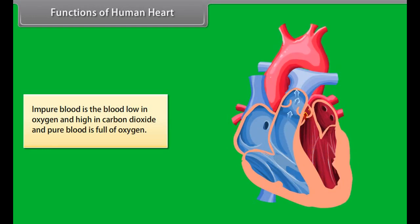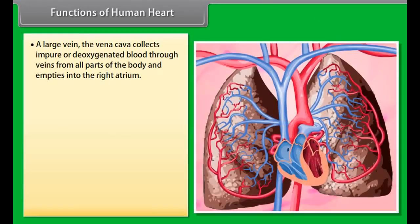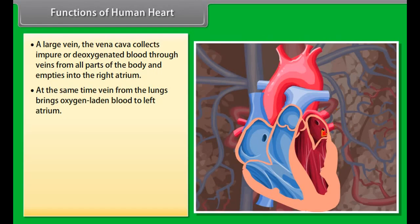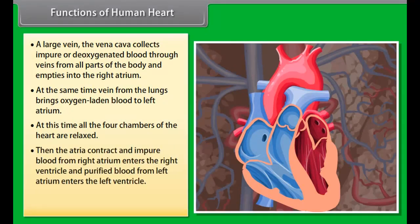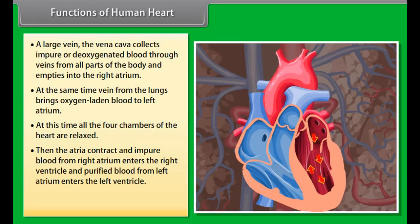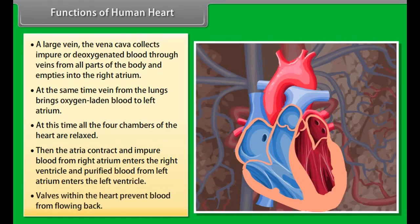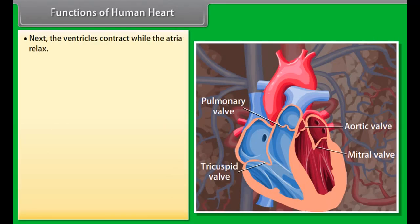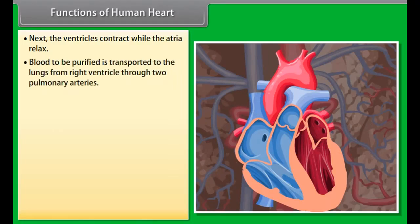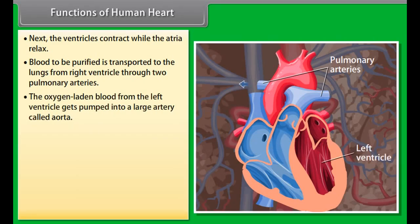Impure blood is low in oxygen and high in carbon dioxide, while pure blood is full of oxygen. The vena cava collects deoxygenated blood from all parts of the body and empties it into the right atrium. At the same time, the vein from the lungs brings oxygen-laden blood to the left atrium. The atria then contract: impure blood from the right atrium enters the right ventricle, and purified blood from the left atrium enters the left ventricle. Valves within the heart prevent blood from flowing back. The ventricles contract while the atria relax. Blood to be purified is transported to the lungs from the right ventricle through the two pulmonary arteries. Oxygen-laden blood from the left ventricle is pumped into a large artery called the aorta.